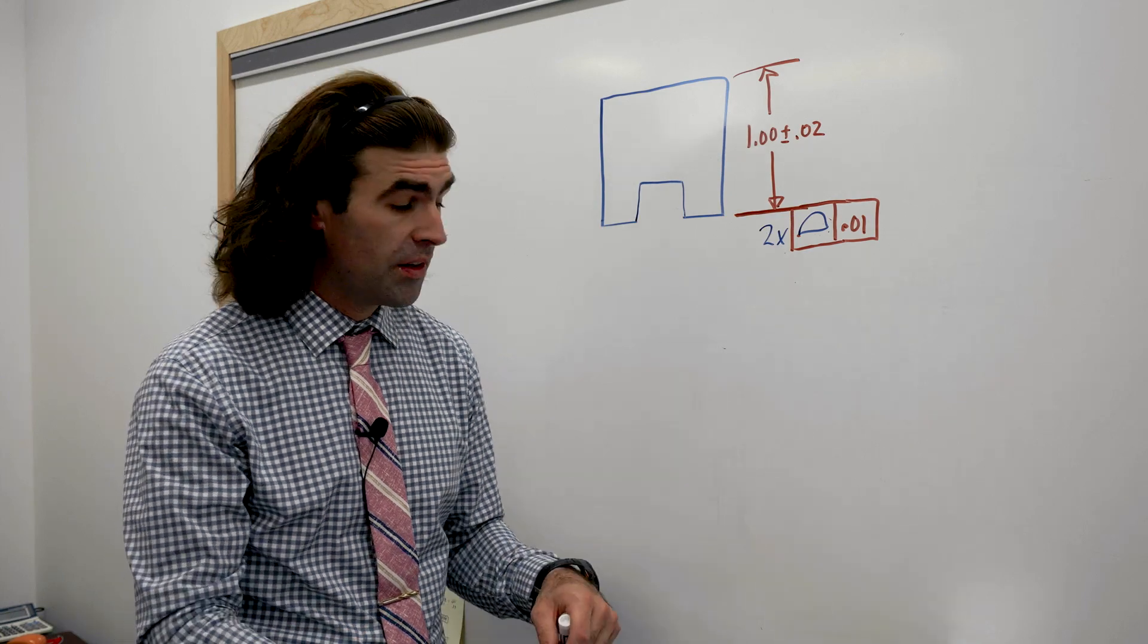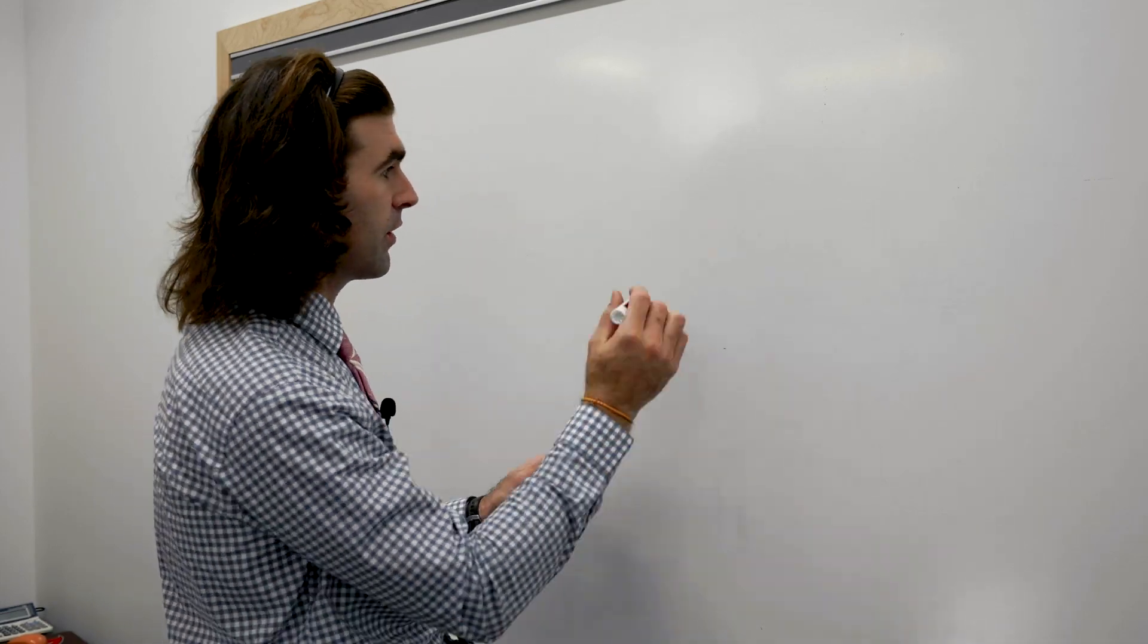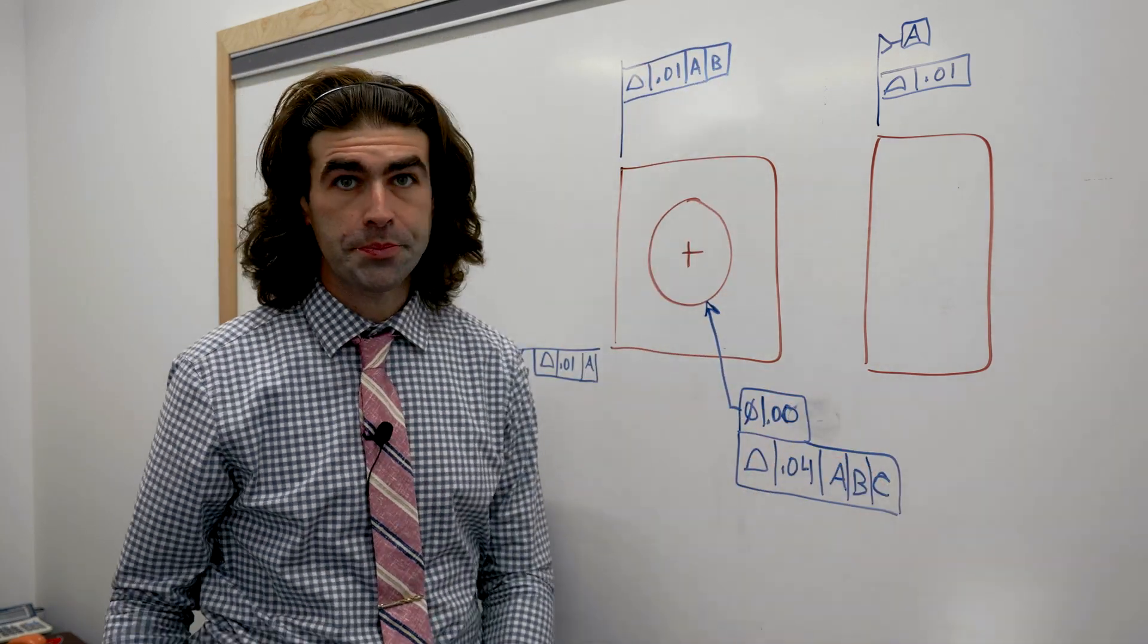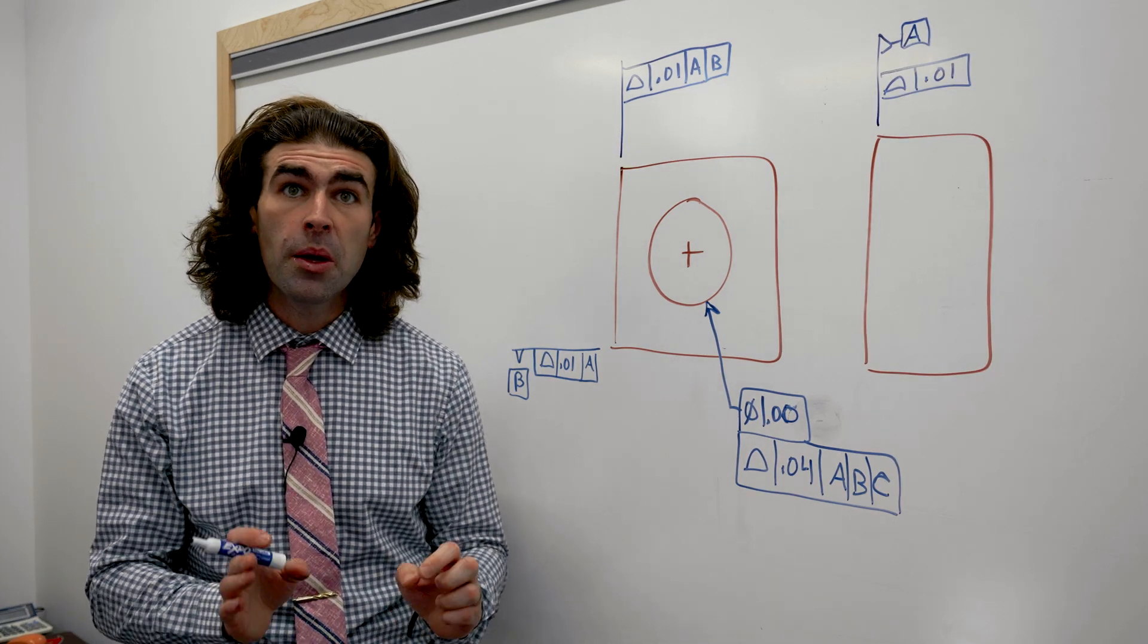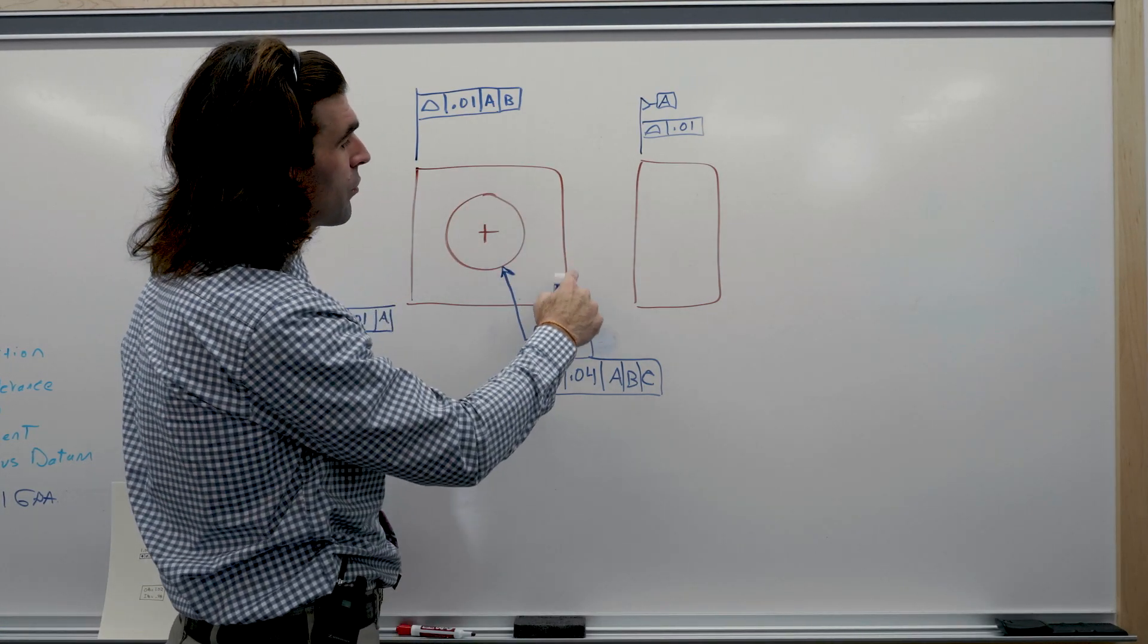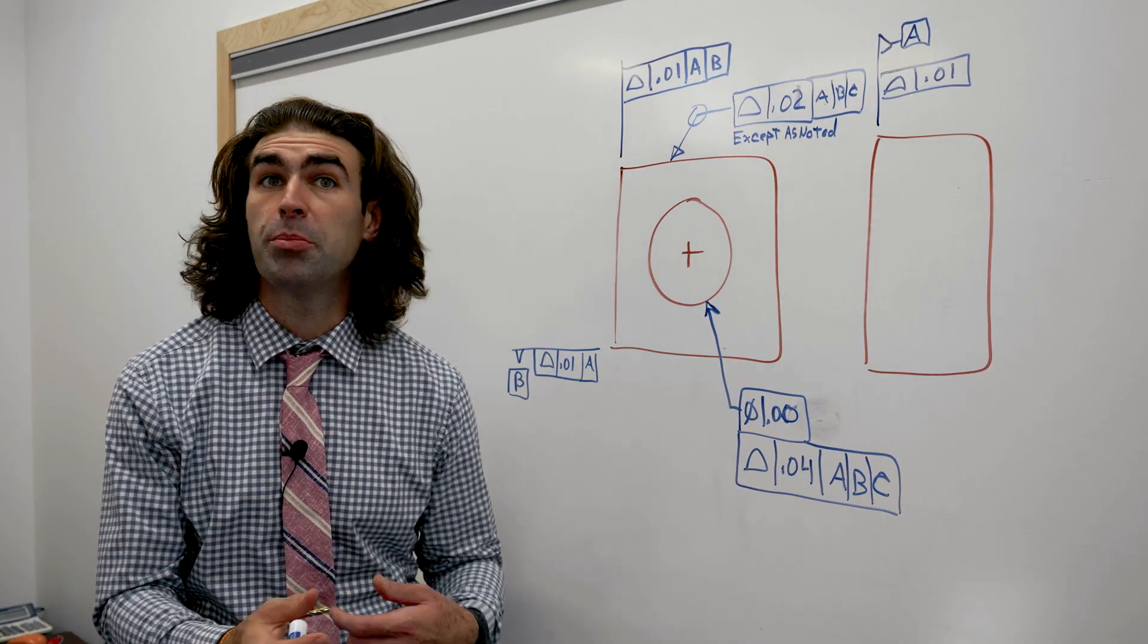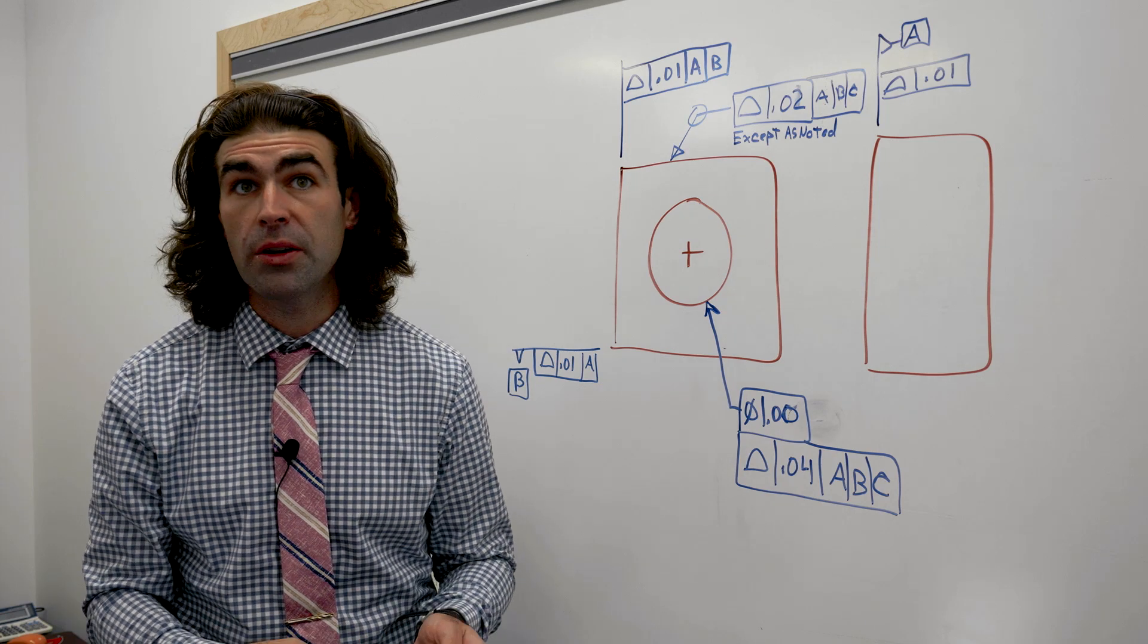Now you could do an entire part without using anything except profile. So let me give you an example. Here's a rectangular block. Of course, this is a common thing I use to talk about GD&T, but in this case, everything is done with profile. The only thing I'd be missing is something to control this surface, which I could do right here. The only thing I'm missing is basic dimensions for all the locations and sizes. But this whole part is done with profile.